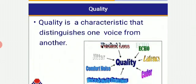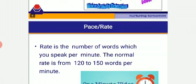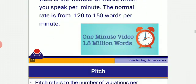Quality is a characteristic that distinguishes one voice from another. All voices are different from one another, and it is very natural — it is innate. The quality of our voice is God-gifted. Then comes pace or rate: it is the number of words which you speak per minute, and the normal rate is from 120 to 150 words per minute. Some people speak very fast, which creates a problem as we are unable to understand them clearly. So it is advisable that you should speak at a normal pace.